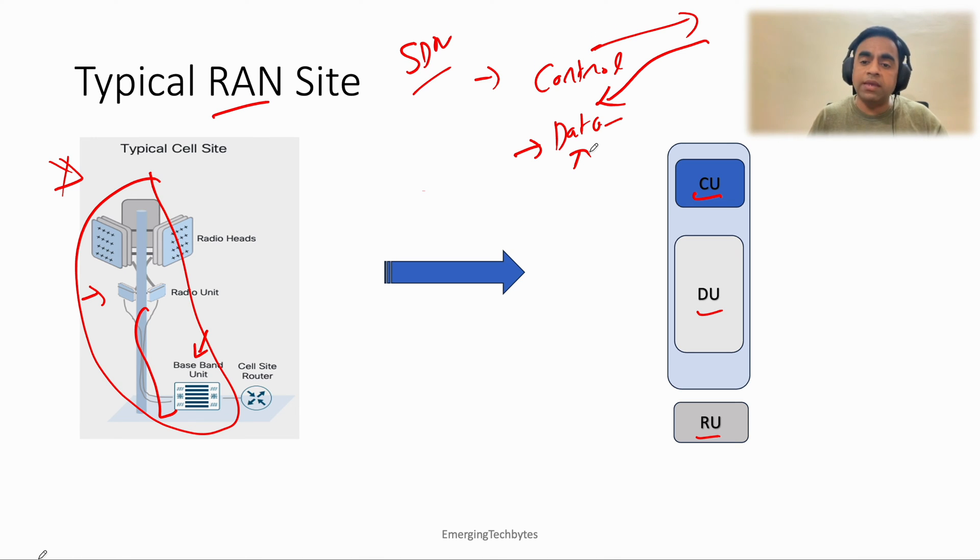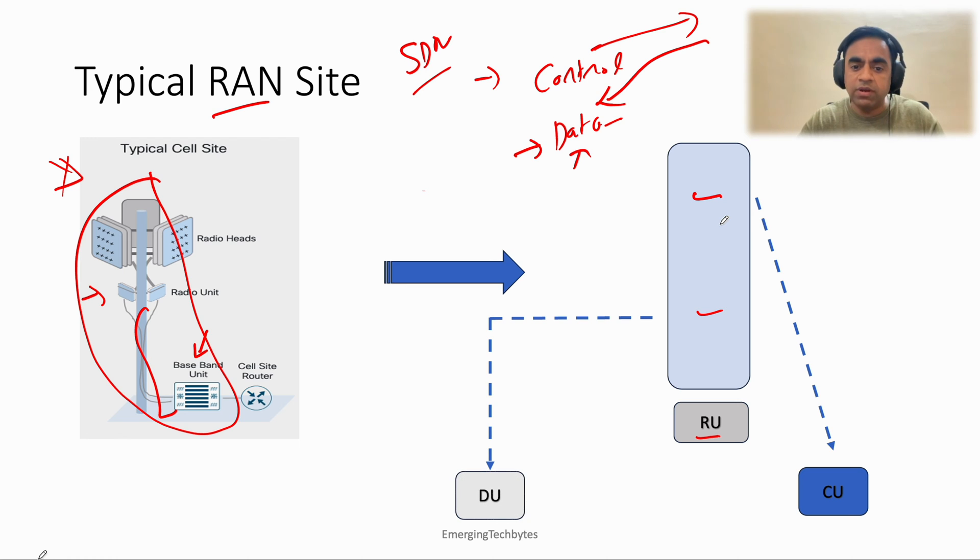That is what is happening even with this splitting of radio functions also. So if I take my CU from here and move it to some place, my DU from the cell site and move it to some other place, and then I just leave the radio unit here, by this split this part becomes cheaper.